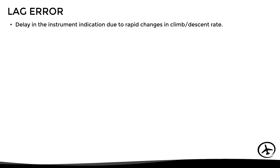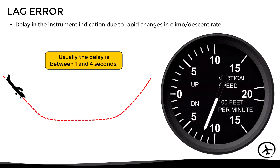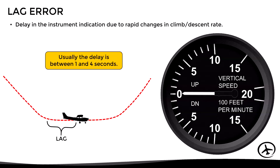Usually the delay varies between one and four seconds. It happens, for example, when the aircraft is in a constant descent and it suddenly levels off — in this case it will take a few seconds for the VSI to indicate level flight. This can also happen when the aircraft is in level flight and it suddenly starts a climb.